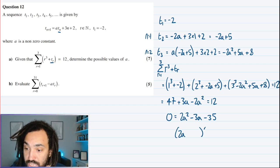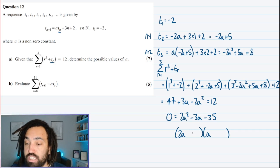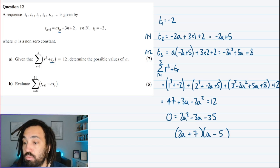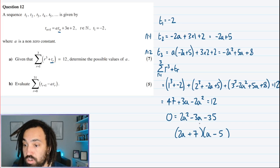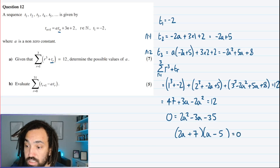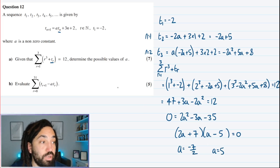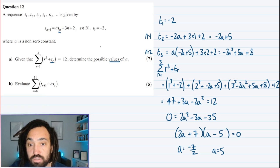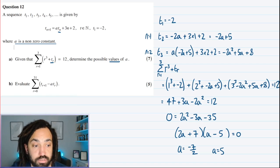So 2a and a, we've got minus 5 over here, will give you minus 10. And then plus 7 here will give me a total of minus 3a, so that works. Brilliant. So we get a is equal to minus 7 over 2, or a is equal to 5. Quick check, and it does say the values of a, so that gives me confidence that I've got two answers, that sounds good. And it just says that a is a non-zero constant. So I feel confident with those two.